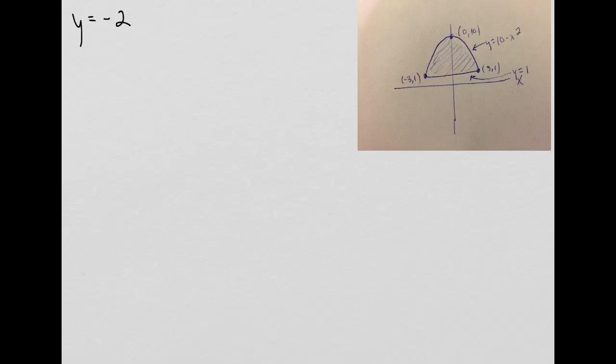So this one, I want to take that region over there on the right, which I'm not going to go over how I get all that stuff. You should be able to do that. You should be able to graph that parabola and find that 3,1 and negative 3,1 where they hit each other.